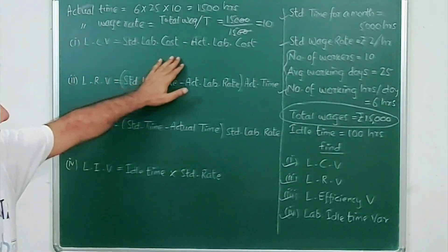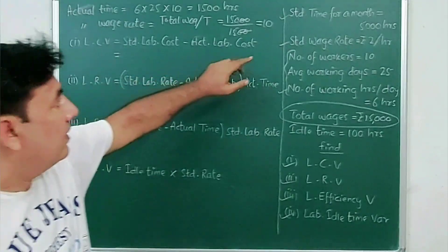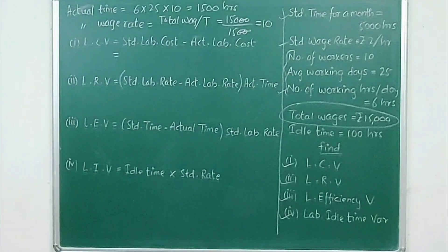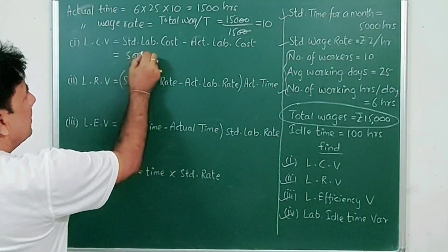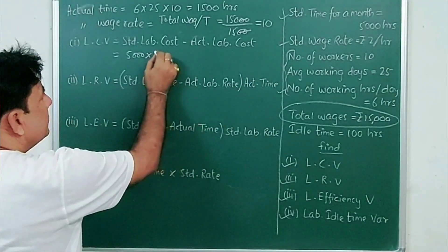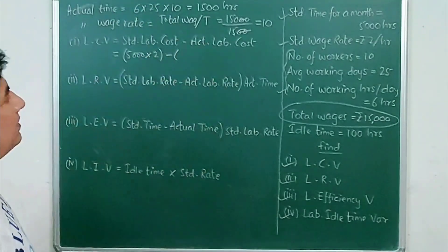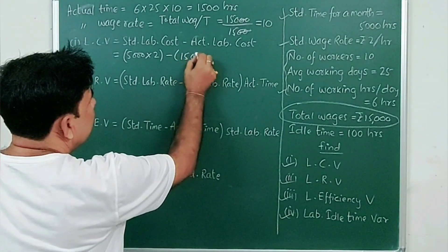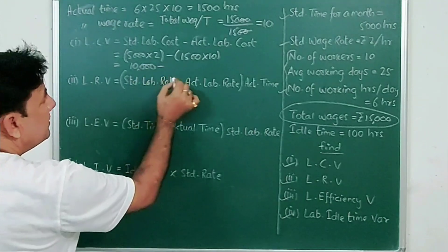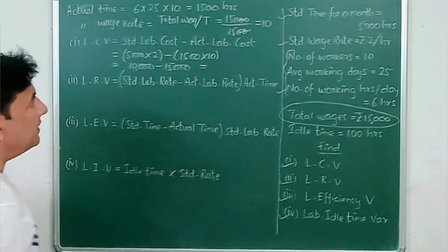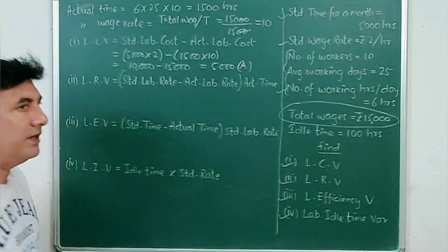Standard labor cost equals standard wage rate multiplied by standard time: 2 into 5000 equals ₹10,000. Actual labor cost equals actual time into actual wage rate: 1500 into 10 equals ₹15,000. Since actuals are higher than standard, the labor cost variance of 5000 is adverse — write 'A'.